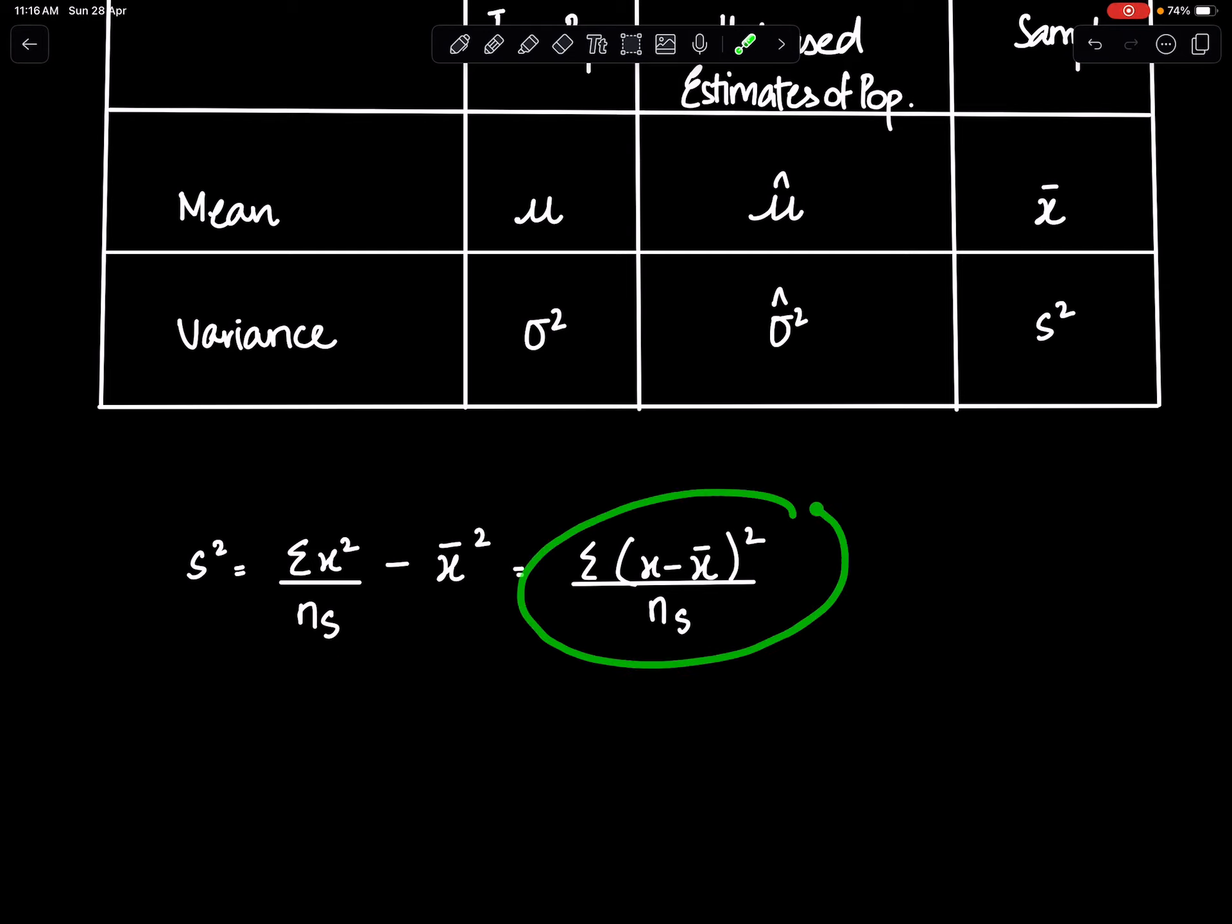And this is the second formula of s square: sigma x minus x bar whole square upon ns. We have done these two formulae in S1.